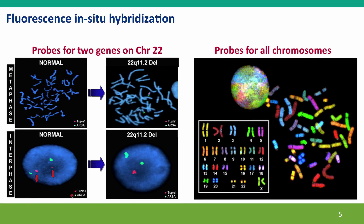These two genes are both present on chromosome 22. Here's what you see when you look at a patient one of whose chromosome 22s carries a deletion. You can see that both chromosome 22s have the green gene present, but only one of the chromosome 22s has the red gene present. That's seen more clearly in the diffuse chromosomes, where there's only one red spot but two very clear green spots. This is diagnostic for saying this red gene has been deleted in this chromosome.